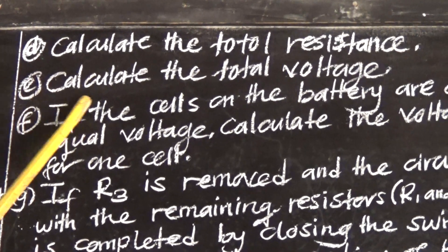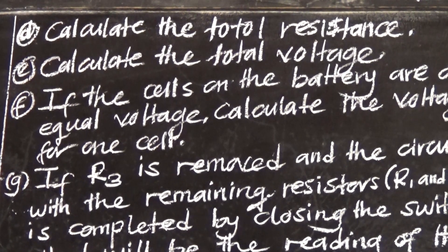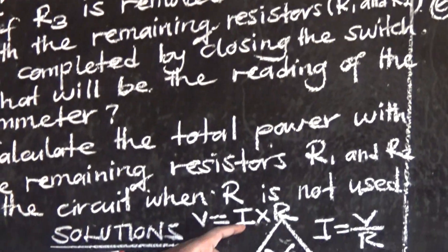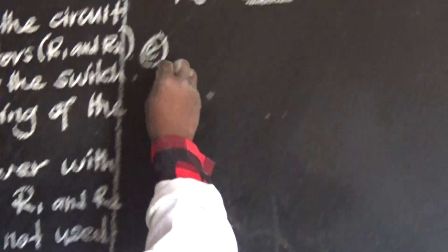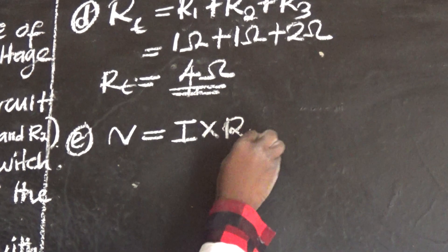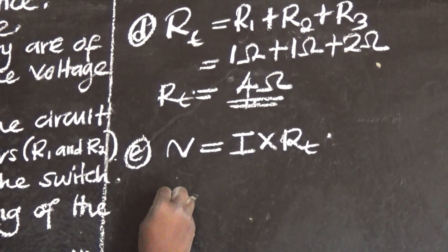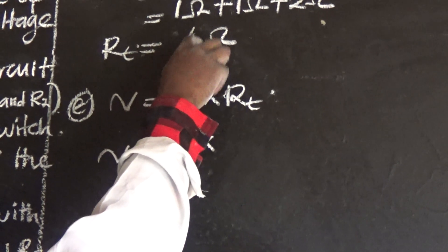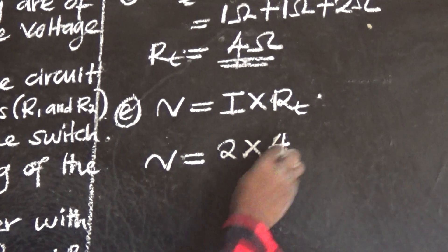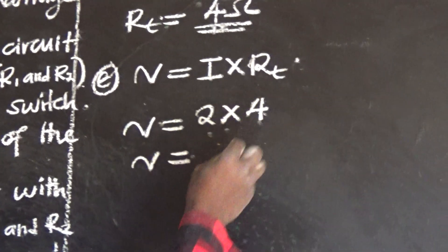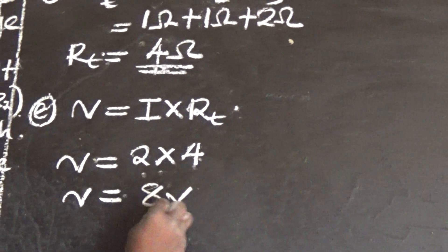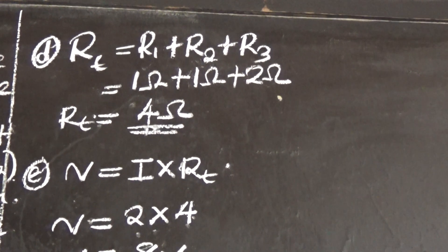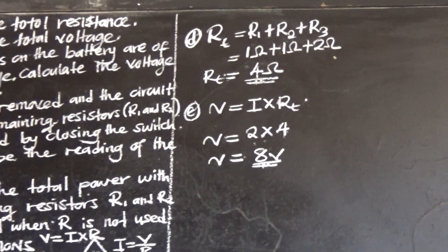Question (e): Calculate the total voltage. Voltage equals current times resistance. Voltage = 2 × 4 = 8 volts. This matches the given value of 8 volts, which confirms our answer is correct. This calculation was done to demonstrate how to verify the voltage.